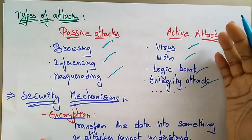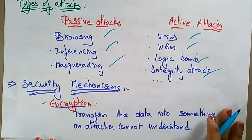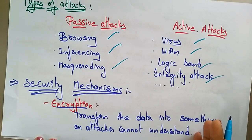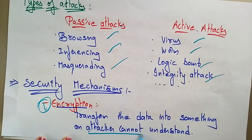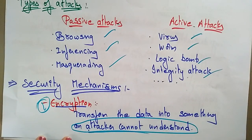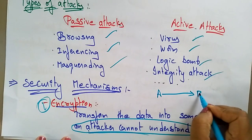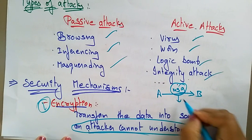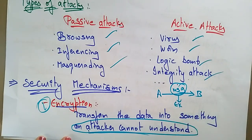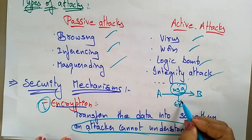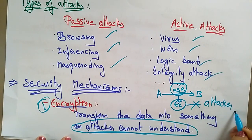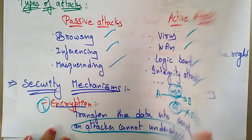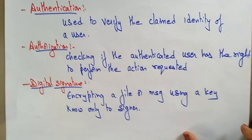Now, what are the different security mechanisms present in a distributed environment? The first is encryption. Encryption means transforming the data into something an attacker cannot understand. When sending a message from A to B, the message is transformed using an encryption key, making it unreadable to an attacker.